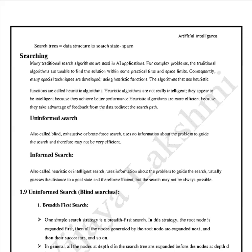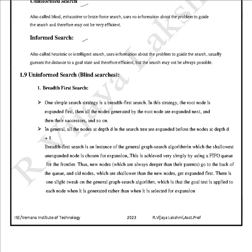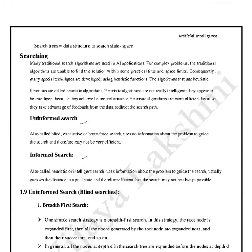There are two different methods to search for an optimal solution to make intelligent agents learn. The first is uninformed search, also called exhaustive or brute force search — it uses no information about the problem to guide the search and may not be very efficient. The second is informed search, also called heuristic or intelligent search — it uses information about the problem to guide the search, usually guessing the distance to a goal state, making it more efficient, though not always possible.